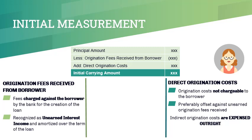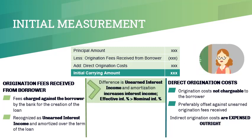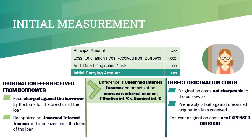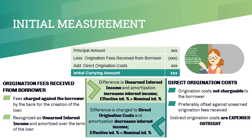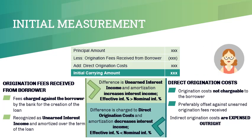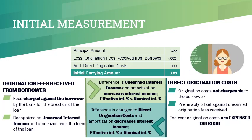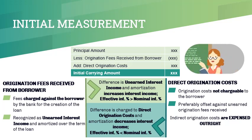When origination fees received from the borrower exceed direct origination costs, the amortization of the unearned interest income will increase interest income. On the other hand, when direct origination costs exceed origination fees received from the borrower, the amortization of the difference will have the opposite effect of decreasing interest income. Consequently, the presence of origination fees requires us to compute for an effective interest rate that will equate the present value of cash flows to the initial carrying amount. I will discuss this in more detail later.